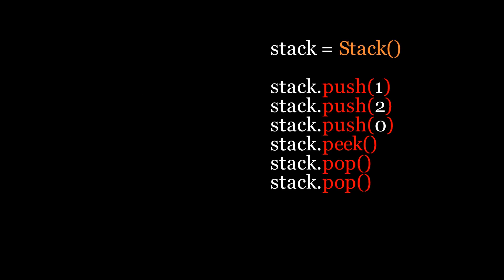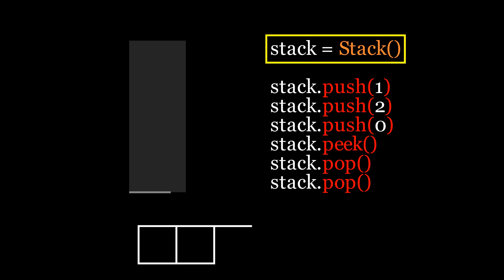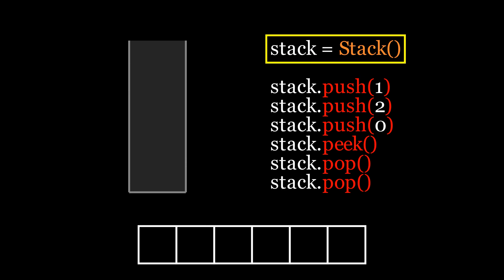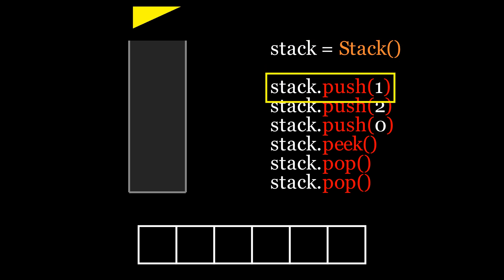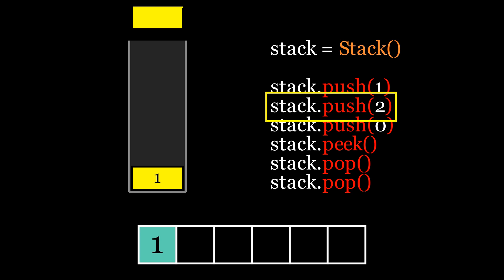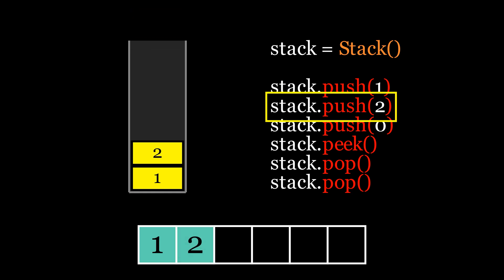Now, let's see these operations in action along with the visual animation. First, we'll initialize the stack object using the class we defined earlier, leaving the limit set to the default of 6. This stack animation is a visual abstract representation, while the array below represents the actual implementation. After initialization, we'll push elements onto the stack. Pushing means appending elements to the array, which is a constant time operation.